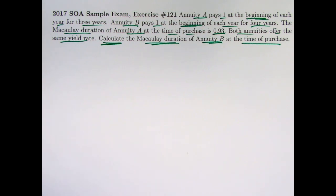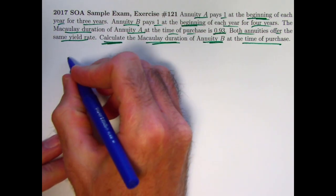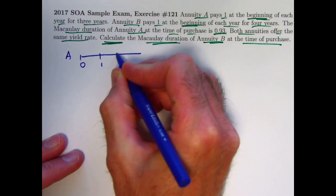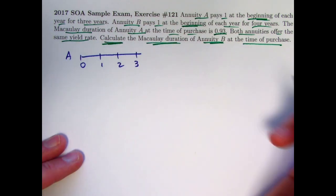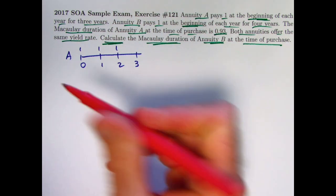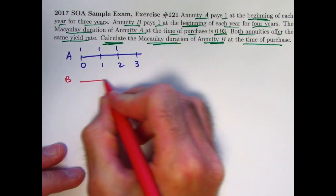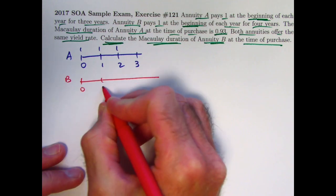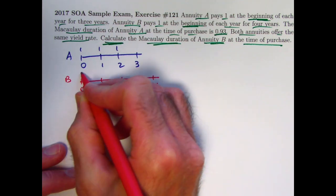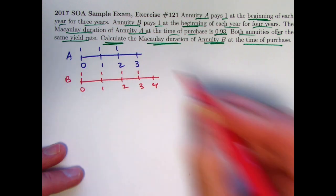So let's go ahead and start by making a couple number lines. First one for A. These payments of one occur at the beginning of each year for three years. That would be three payments of one at times zero, one, two, and three. And then we have the timeline for annuity B extending out one more year with one more payment, beginning of each year for four years at times zero, one, two, and three.